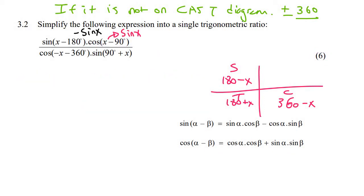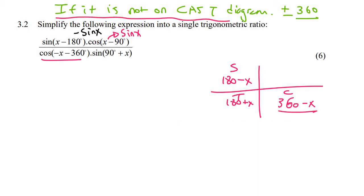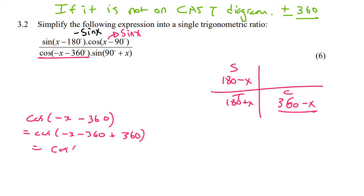Now, cos of minus x minus 360 is not even close to that. So now we can use this rule. If it is not on the CAST diagram, add or minus 360. This one we're going to have to add. So we can say that that's going to be equal to cos of minus x minus 360 plus 360, and that's just going to cause the 360s to cancel. So that's going to give us cos negative x. What we do now is we can add 360 again. When you add, the order doesn't matter, so that becomes 360 minus x. Now that's on the CAST diagram, and cos is positive in that quadrant, so it just becomes cos x.